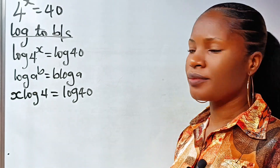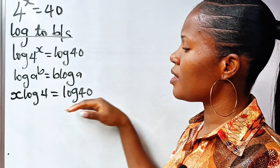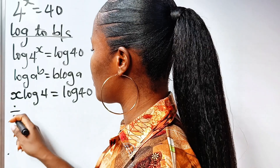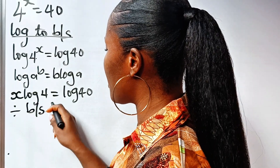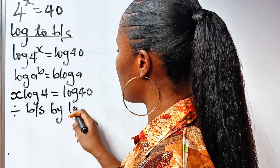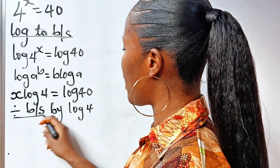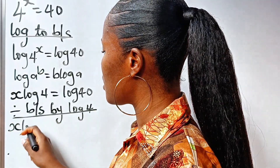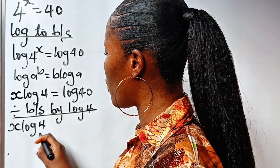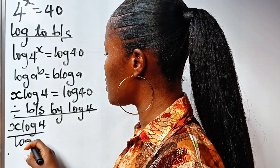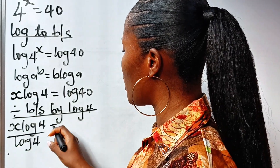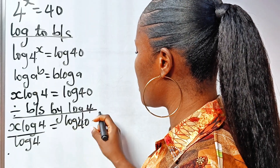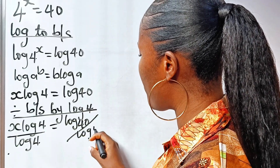Now let's divide both sides of this equation by log 4. So if we do that, we have x log 4 divided by log 4 is equal to log 40 divided by log 4.